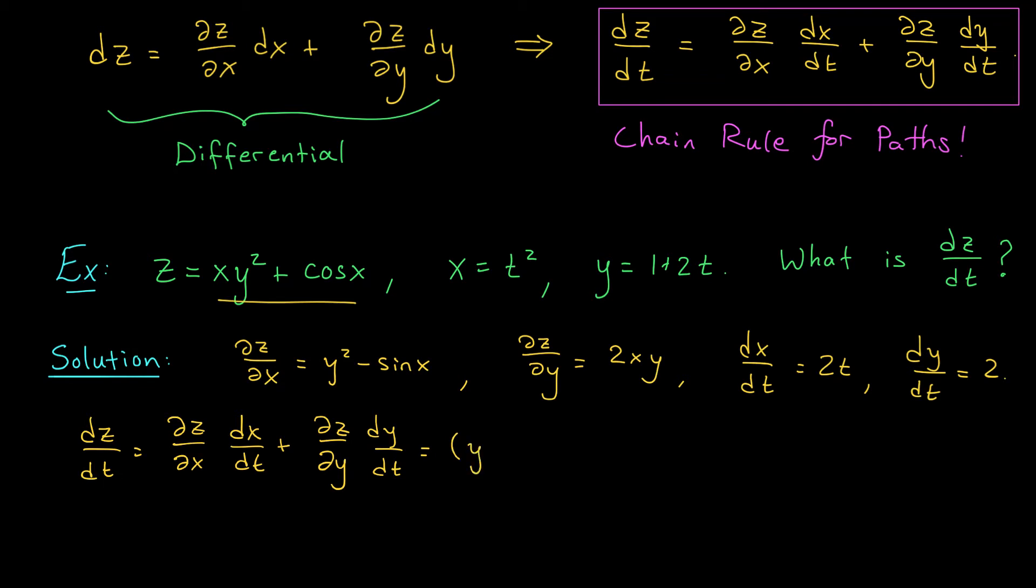That is, it should be y squared minus sine x times 2t plus the partial with respect to y that's 2xy times the derivative of y with respect to t times 2. Now notice that the function that we got in the end involves x and y still, but we really asked for the derivative of z with respect to t. So our final answer should probably just have t's in it. To accomplish this,